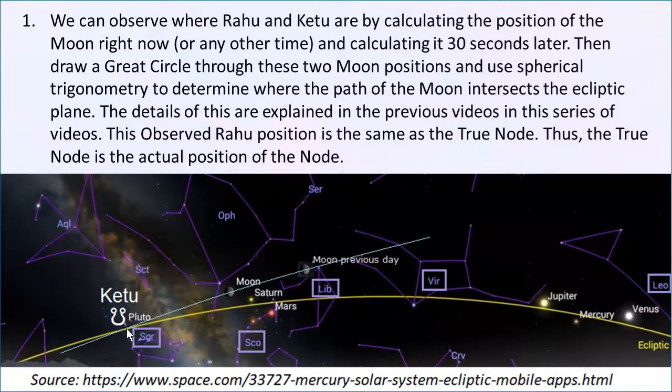It is where the node is. You look up at the sky — where's the node? That's where it is. There's a lot of technical detail about how this is done, and all of that is explained in the previous videos. To summarize briefly: we've done calculations that were never done before. I solved the problem using spherical trigonometry and put a feature in the Sirius software where you can run it yourself, and it confirms that what we call the true node in astrology is where the node actually is. Just look up in the sky and that's where it is. Done deal.